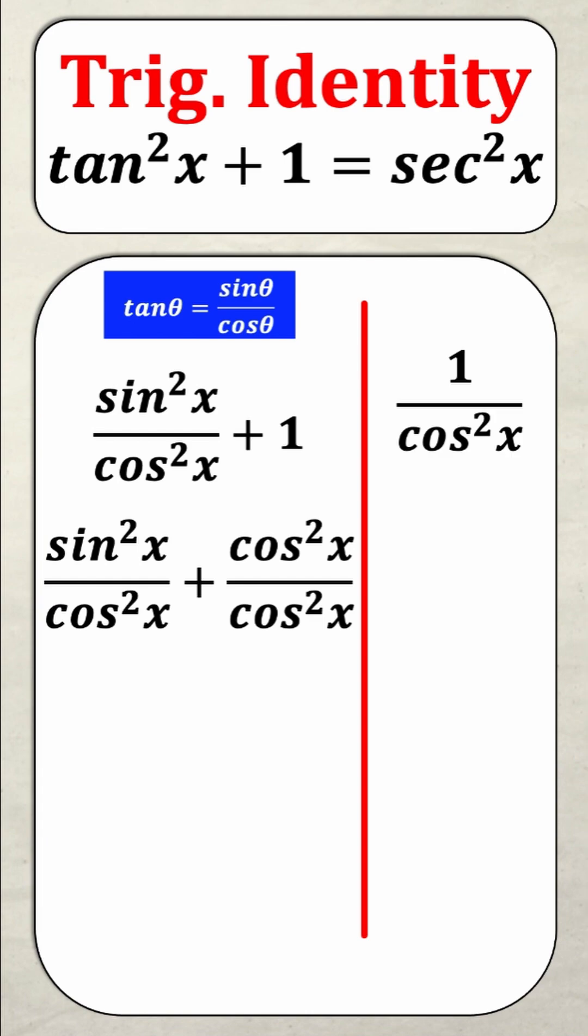Now that the denominators are the same I can add across the top. So sine squared x over cos squared x plus cos squared x over cos squared x is sine squared x plus cos squared x all over cos squared x.